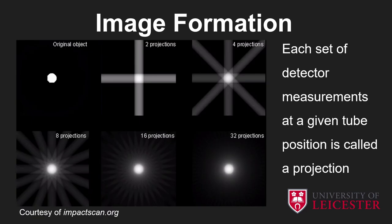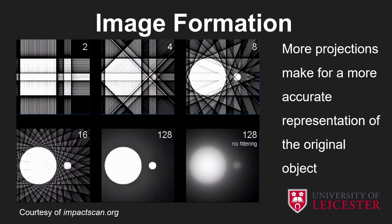We don't just take one picture of the object we're scanning — we take several, each called a projection. You can see from this sequence of pictures that the more projections we take, the more exposures we make of the tube moving around the patient, the better the picture is in approximating what the original object was — in this case a sphere floating in space. With a slightly more complicated object, the more projections you have the more true the image is. There's also more processing involved in sharpening and fine-tuning that image.